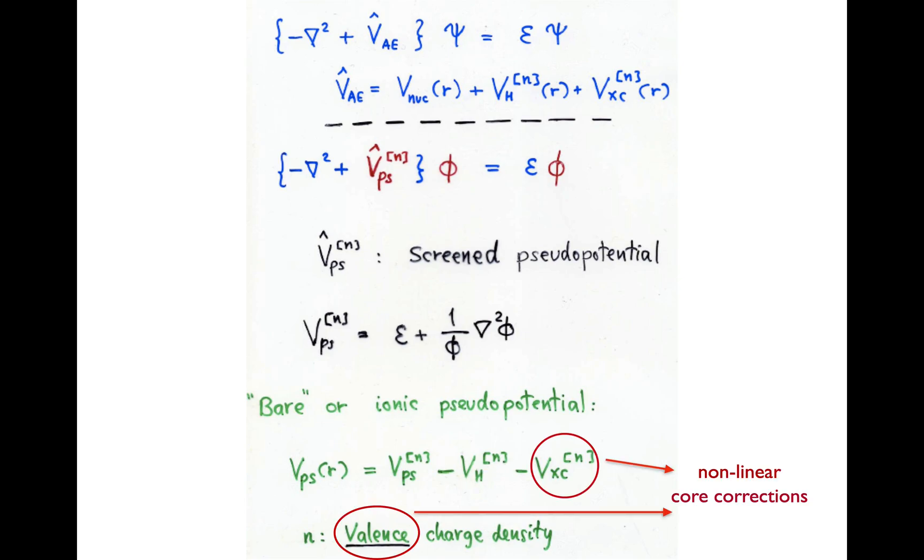There are some minor complications with this, because this term is non-linear in the charge density, and in some cases you need to take into account some model for the core charge to do the unscreening correctly, particularly for magnetic systems. This is the subject of non-linear core corrections.